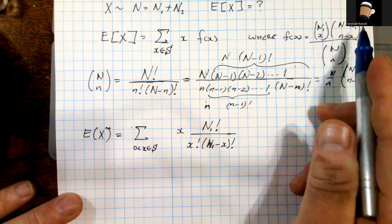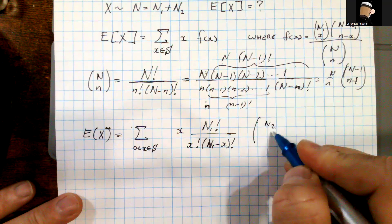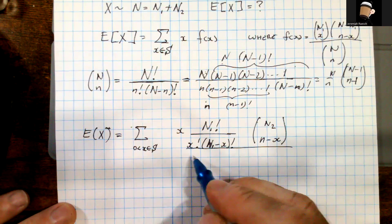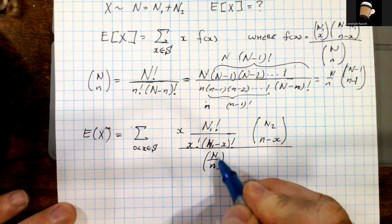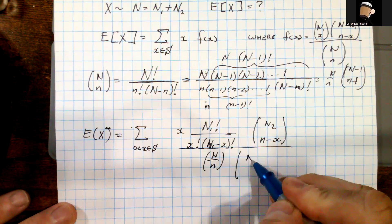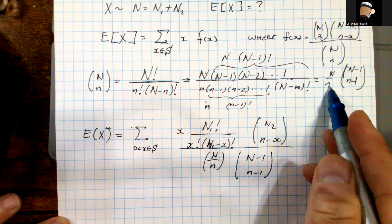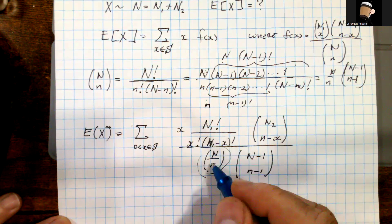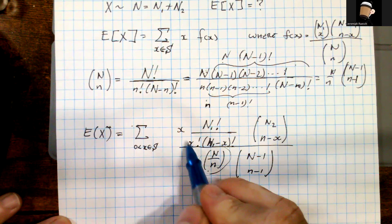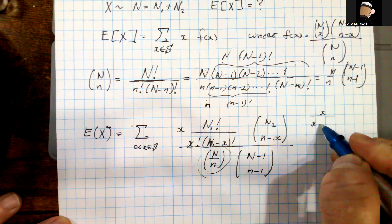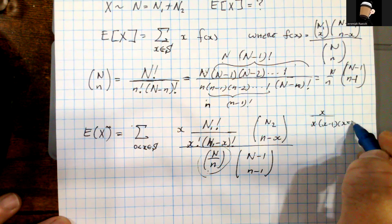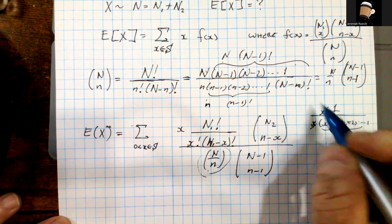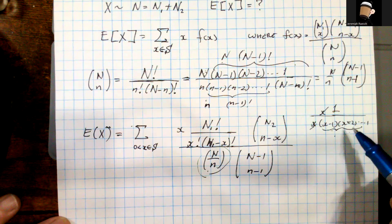I'll call n − n1 = n2 for simpler writing. So this is n2 choose (n−x). All of this is over the ratio N/n times (N−1 choose n−1). A couple things happen: I'm going to move the N/n term out front as its reciprocal flipped over. There is a common factor of x in the numerator — x divided by x! gives 1/(x−1)!. So x cancels with the leading x in x!, leaving (x−1)! in the denominator.